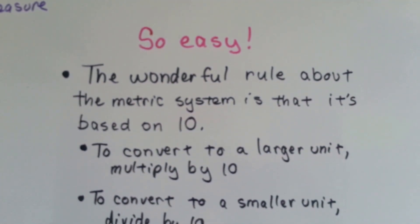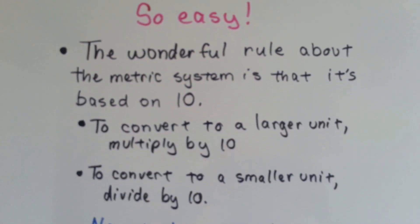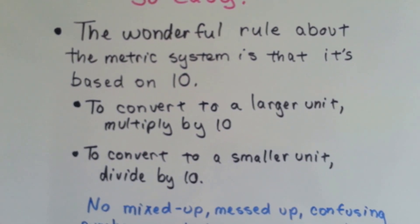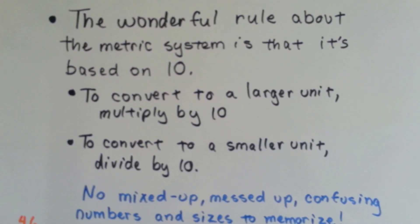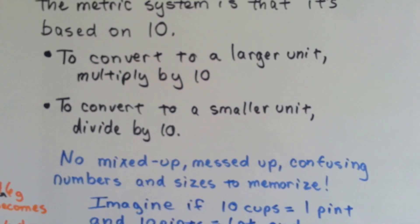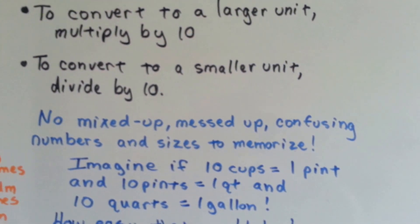It's so easy. The wonderful rule about the metric system is that it's based on 10. To convert to a larger unit, you multiply by 10. To convert to a smaller unit, you divide by 10. There's no mixed up, messed up, confusing numbers and sizes to memorize.